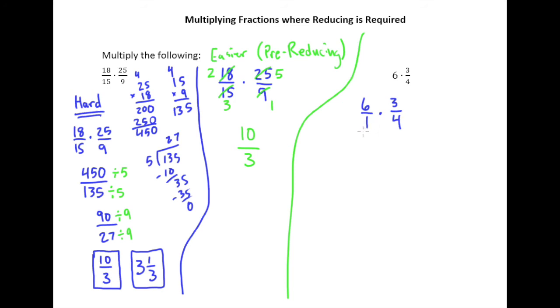And instead of multiplying straight across, we're going to first check to see if anything on top can, we call it cancel with anything on bottom, but really we're just looking to see, can I divide one of the numbers on top and one of the numbers on bottom by the same thing?